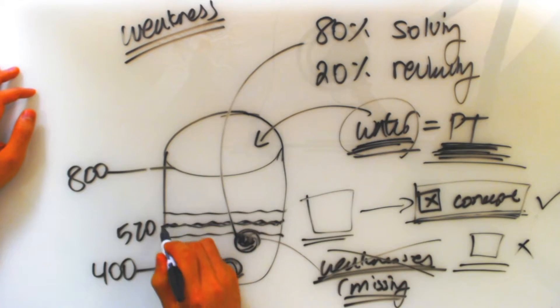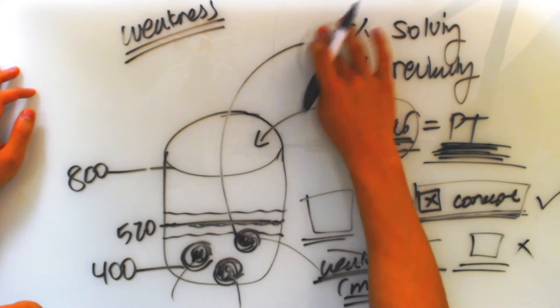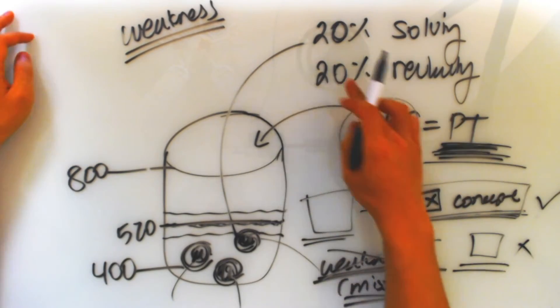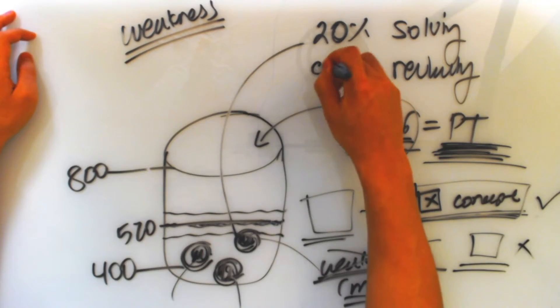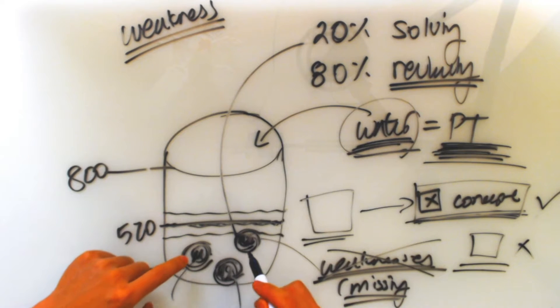But in order for you to raise your SAT score, these two things have to be flipped. You have to spend 20% of the time solving because you're going to have to solve the questions, right? But you're going to have to spend 80% of the times reviewing your wrong questions and filling in the holes.